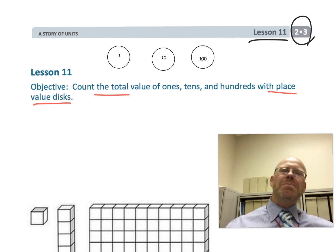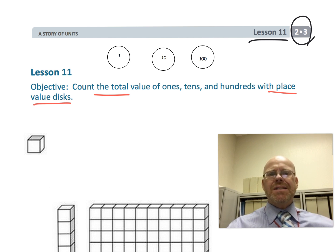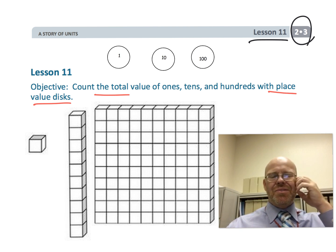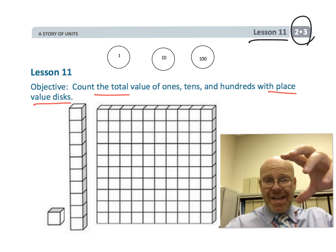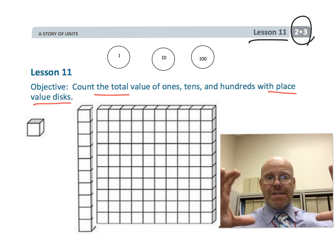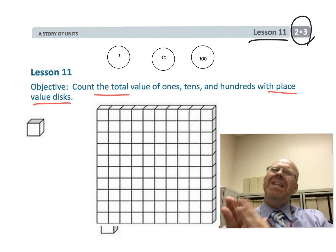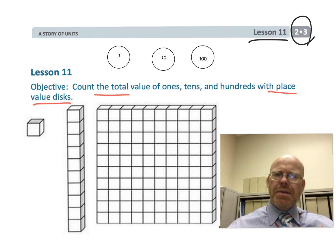The big thing, the difference between the two - why would we want to do both? Well, the base 10 blocks give you a sense of scale. The 1 is a tenth as big as the 10, and the 10 is a tenth as big as the hundred. So you get a sense of scale as you're building the numbers.